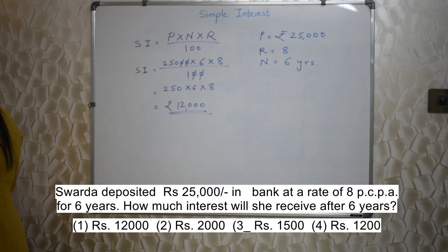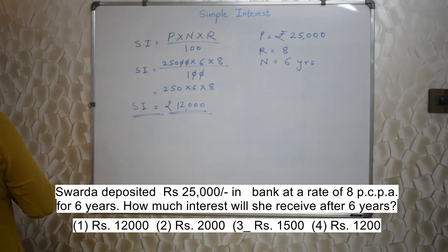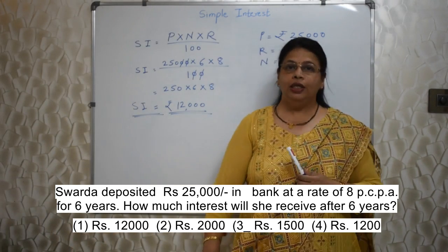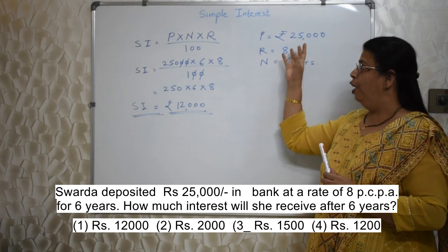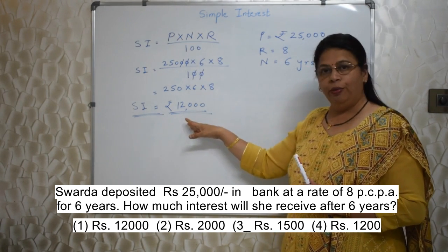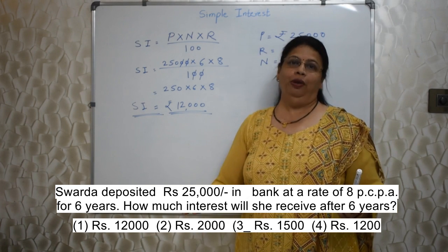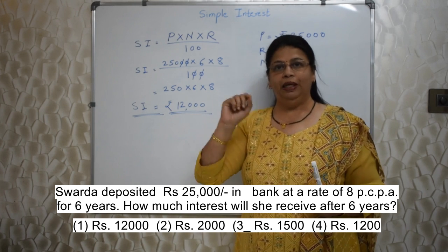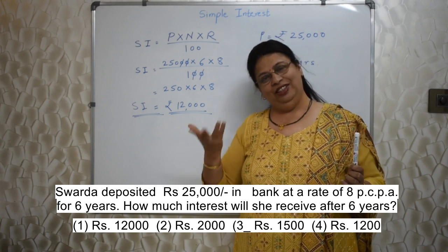The answer is ₹12,000 because they asked how much interest — and this is the simple interest. Very easy. I just found out what is given, put the values in the formula, solved it, and got the answer. It is formula-based. The only thing is you have to do the calculation properly — the division and multiplication — and two marks are in the pocket.